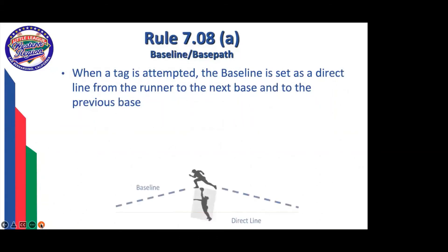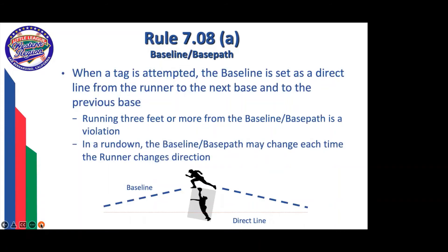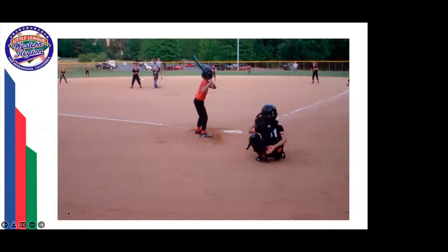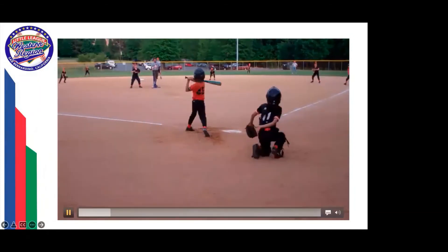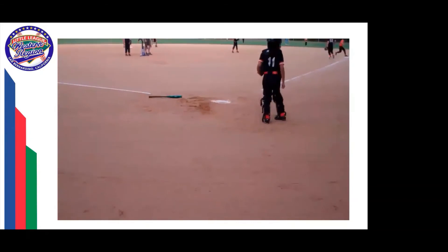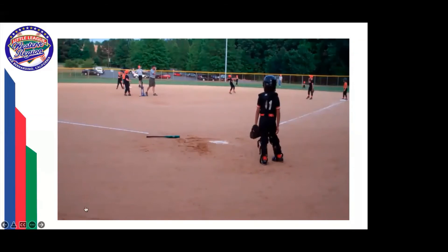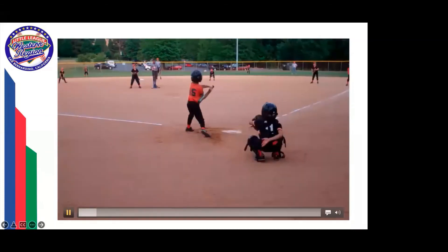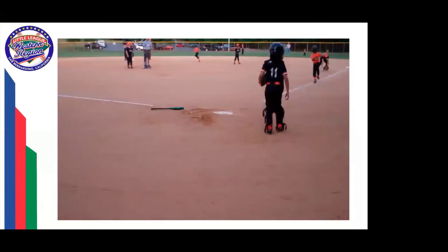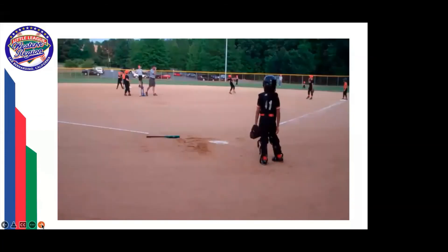Talking about baseline and base path: you end up in violation with three feet or more out of the baseline. The tag must be initiated for the play to be ruled a runner being out of the baseline. In the clip shown, no tag is initiated — therefore the runner is okay. There's no attempt at a tag, and he makes it to first. That would not be a violation.